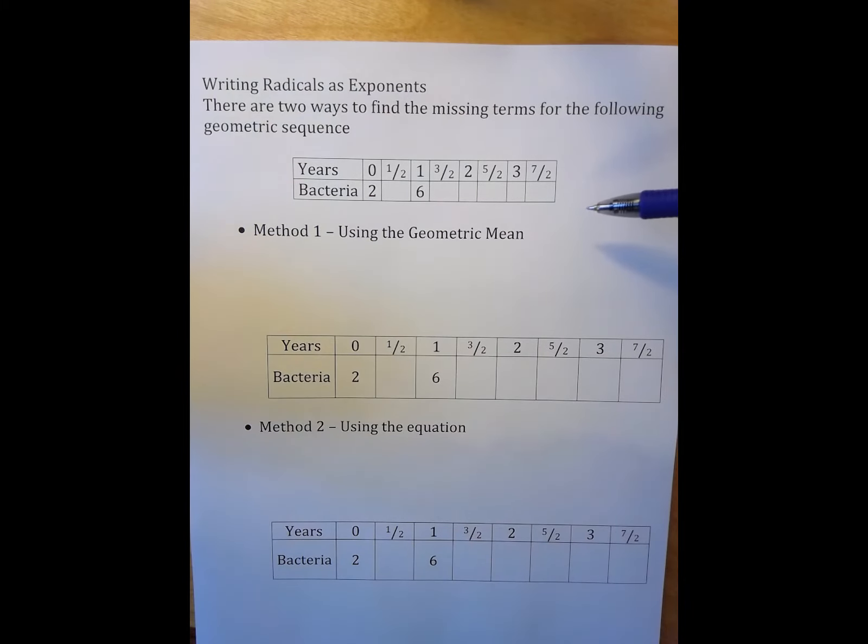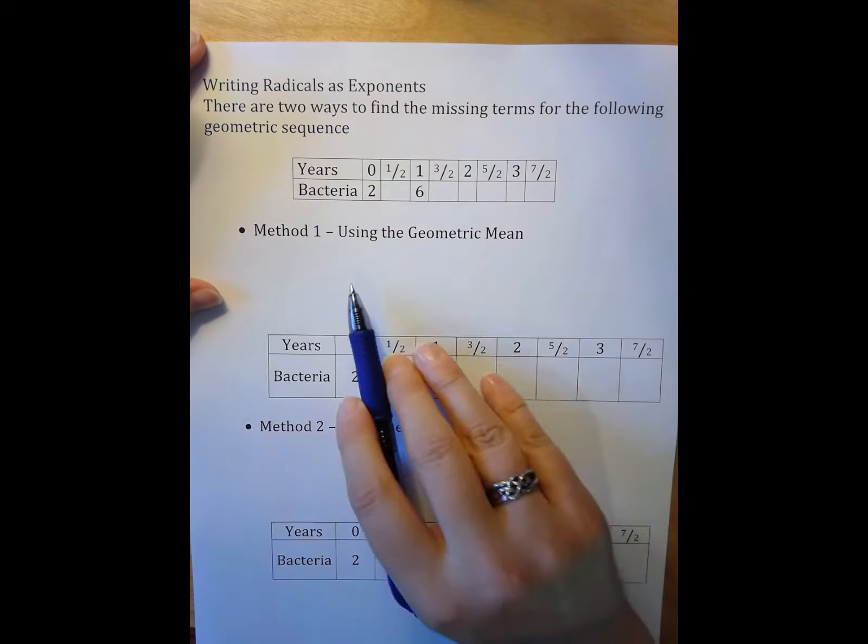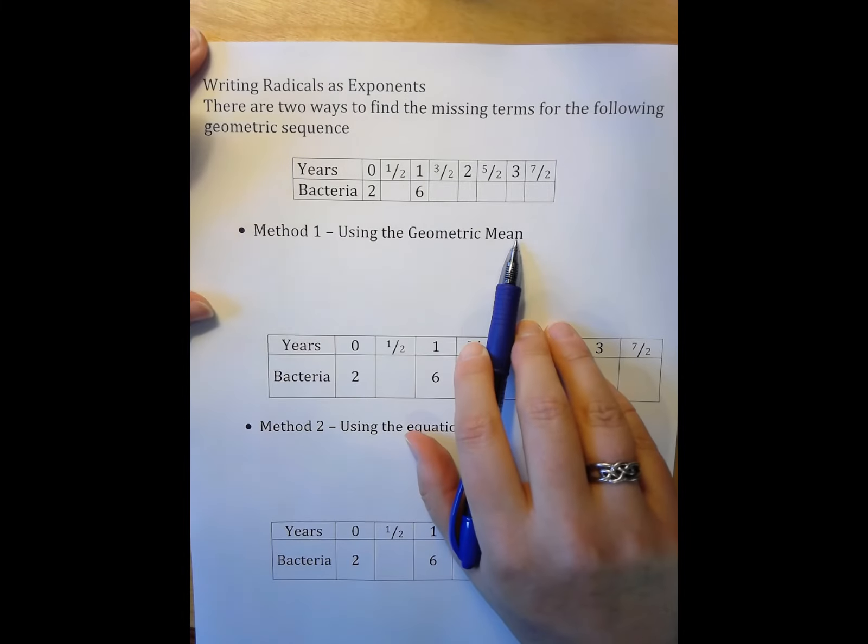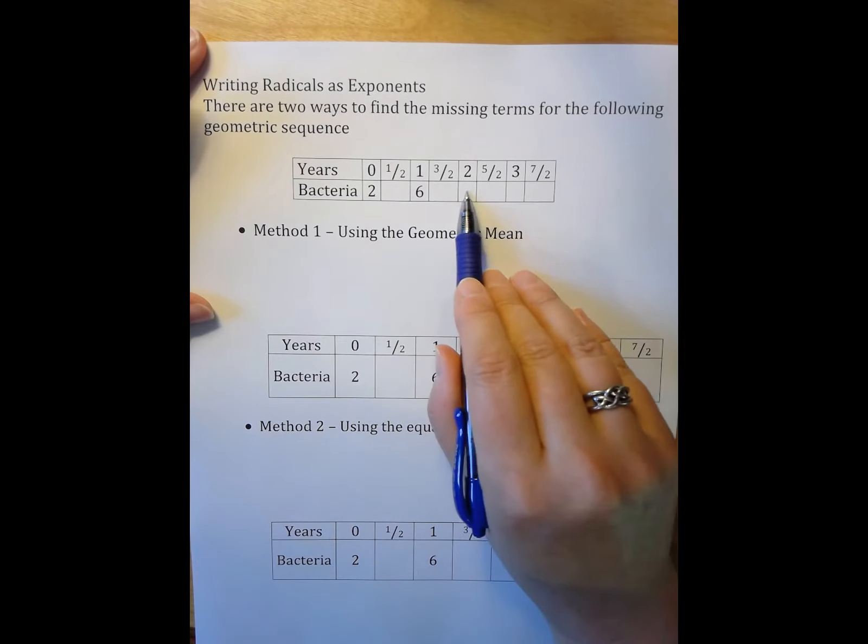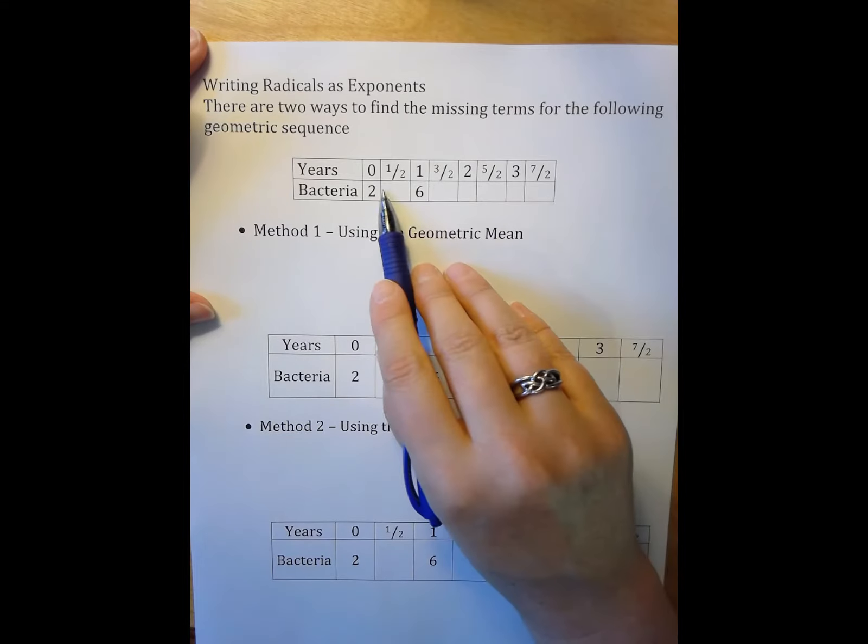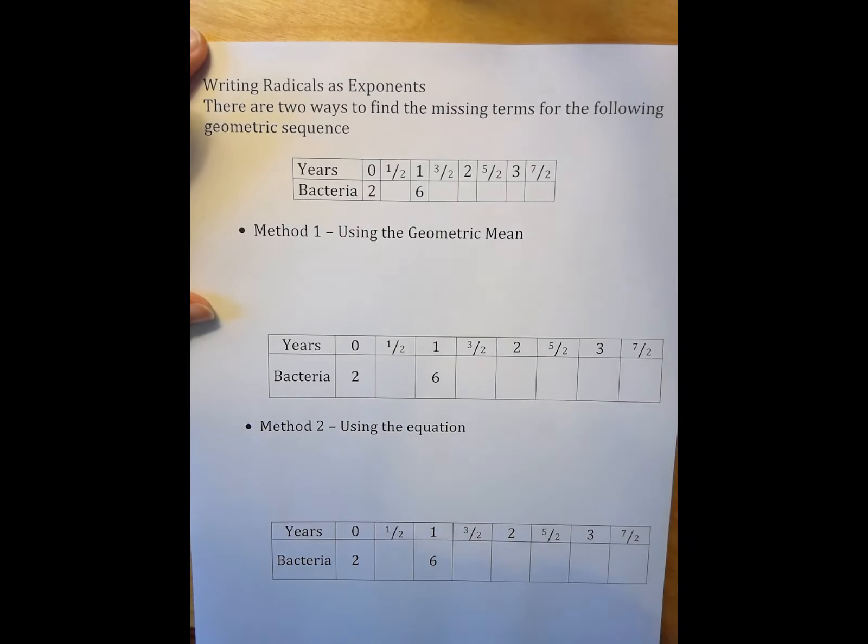The first method is using a geometric mean. We're looking at a geometric sequence, that's what exponents are. Geometric mean means to find the missing numbers in the table where you're given two or three of the numbers already.